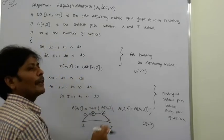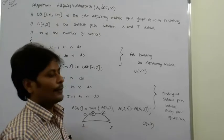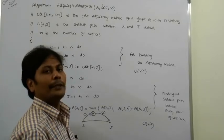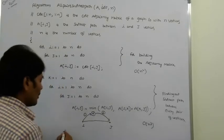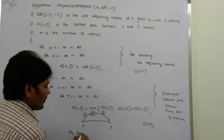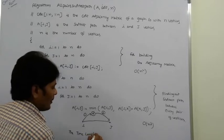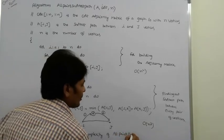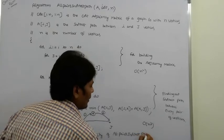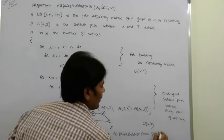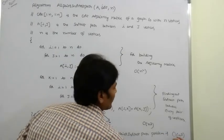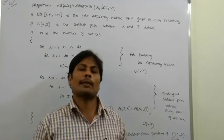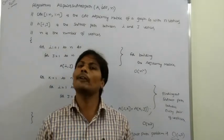This procedure is followed for every pair of vertices in the given graph. By using this formula, we find the shortest distance between every pair of vertices. The time complexity of the All Pairs Shortest Path problem is O(n³). This is the algorithm for the All Pairs Shortest Path problem and its time complexity is O(n³).